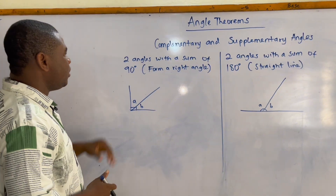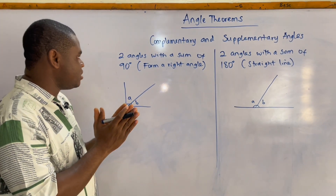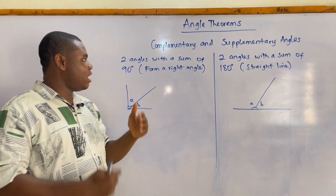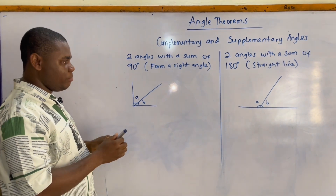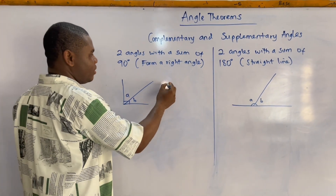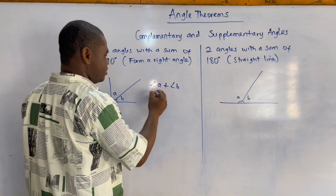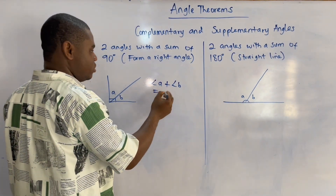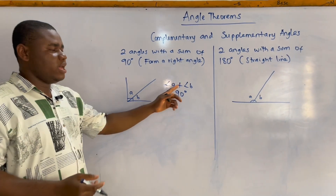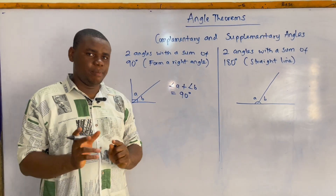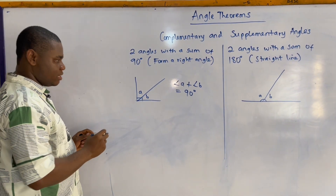When two angles sum up to 90 degrees, they form a right angle, so they are complementary. It therefore means that in this case, angle A plus angle B is equal to 90 degrees, so A and B are complementary angles.